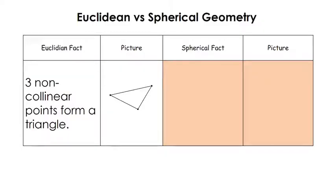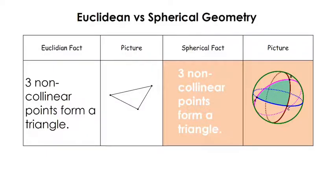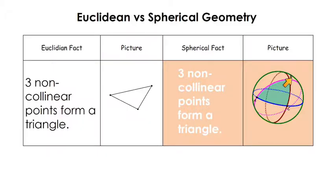Next: three non-collinear points form a triangle — and this is one fact that is actually the same in both geometries. In spherical geometry, three points will also form a triangle. Keep in mind, the sides won't be straight like in Euclidean geometry, because the shortest distance between two points is an arc, not a line. So this is still considered a triangle in spherical geometry.